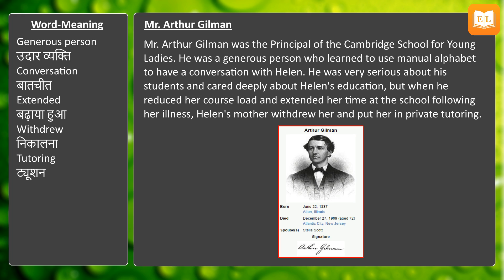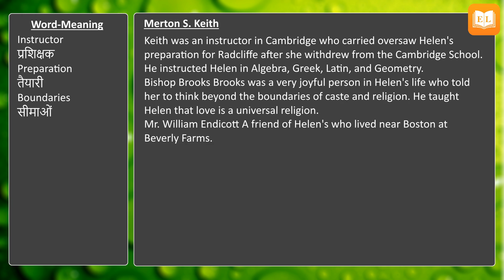Mr. Arthur Gilman was the principal of the Cambridge School for Young Ladies. He was a generous person who learned to use the manual alphabet to have a conversation with Helen. He was very serious about his students and cared deeply about Helen's education. However, when he reduced her course load and extended her time at the school following her illness, Helen's mother withdrew her and put her in private tutoring.